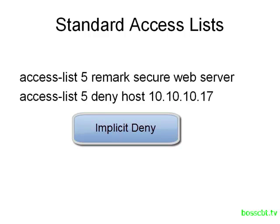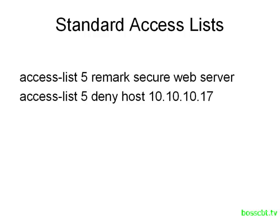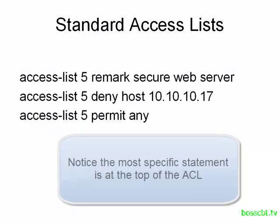This is because of the implicit deny at the end of an access list. Even with no other lines, if a packet doesn't match 10.10.10.17, it would be caught by the implicit deny, which drops any packet that doesn't match any line. So we need to address that. We add a final line: 'access-list 5 permit any', so after denying the single host, everyone else is allowed access. That completes our access list.